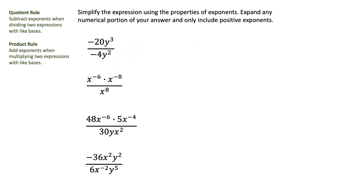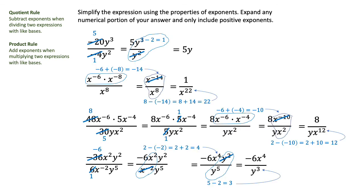I'm going to give you 4 more examples that you can practice with. You can pause the video and practice the skills, then come back and check your answers. Here are the answers: the first expression reduces to 5y; the second expression is 1 over x to the 22nd power; the third expression is 8 over yx to the 12th; and the fourth expression is negative 6x to the 4th over y to the 3rd. You can take a look at all of the work involved — good luck as you practice these skills. There will be a sequel.